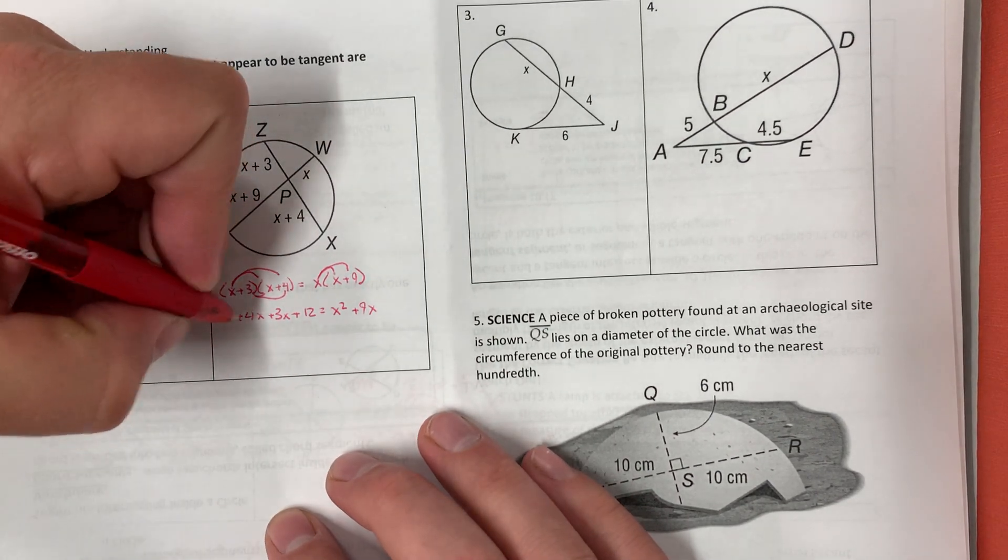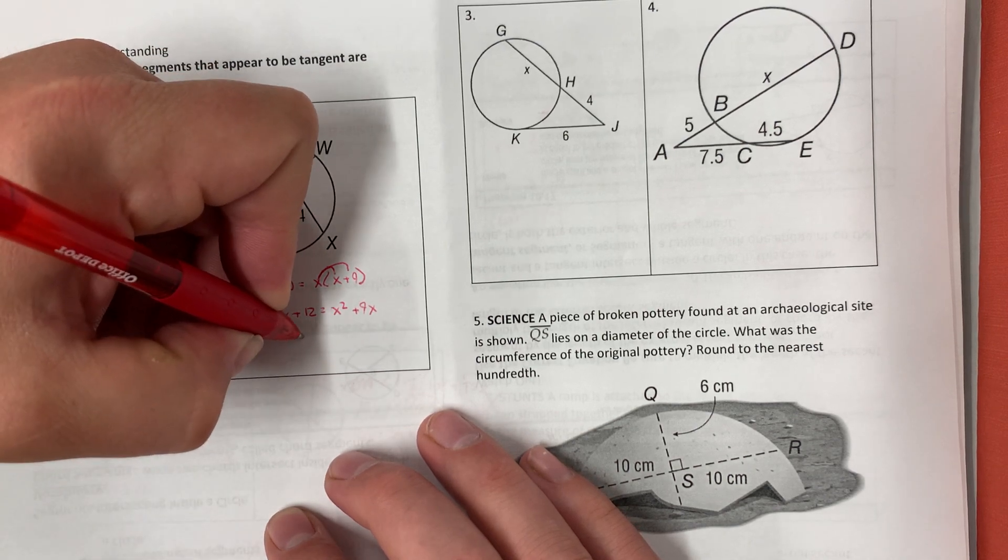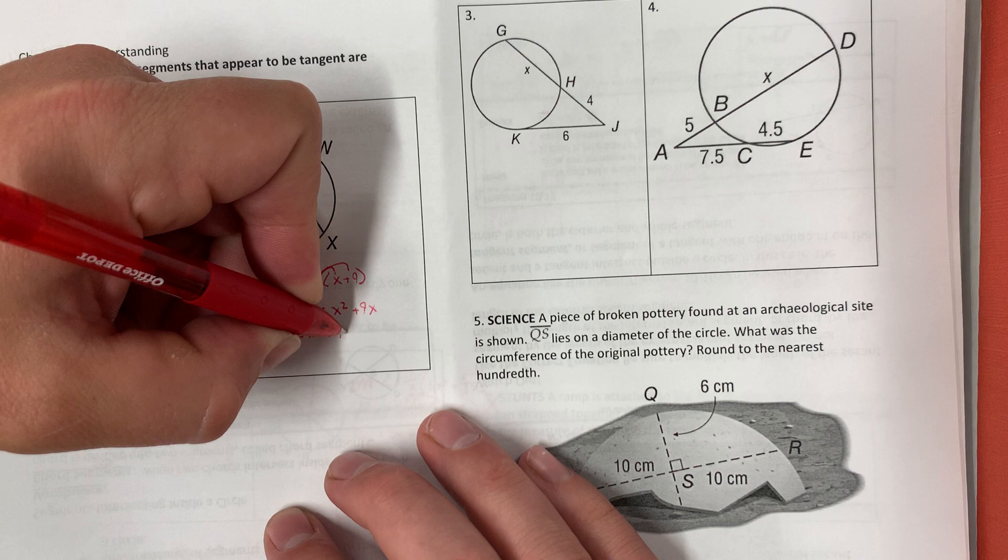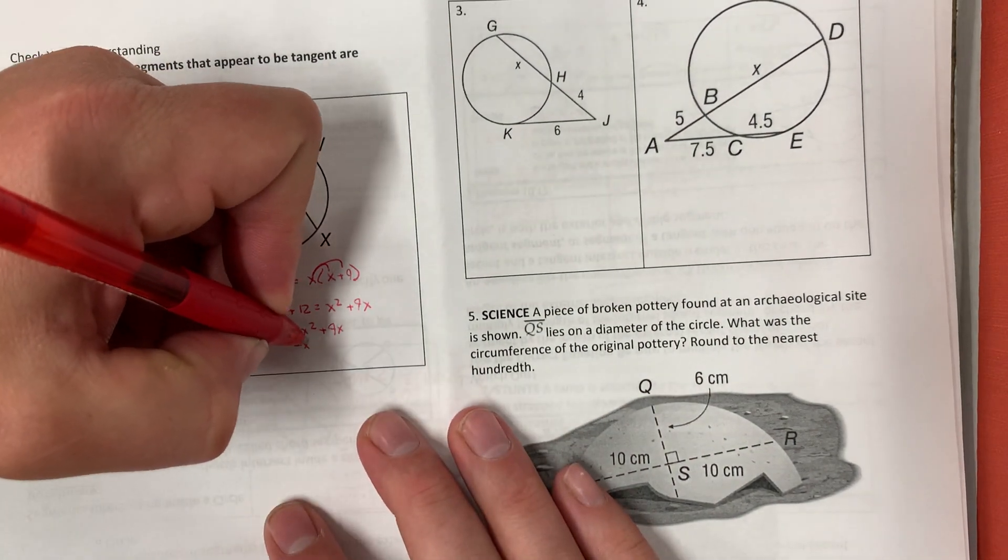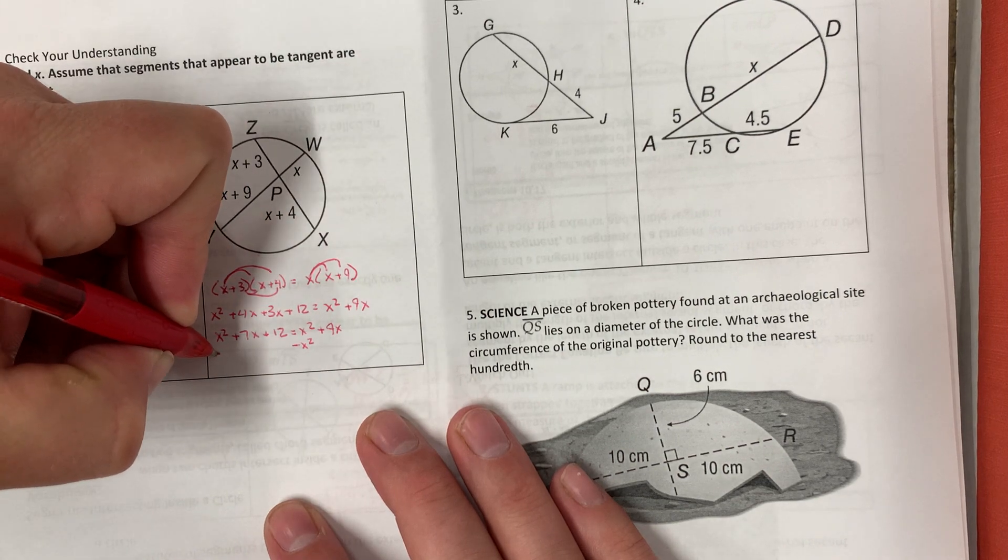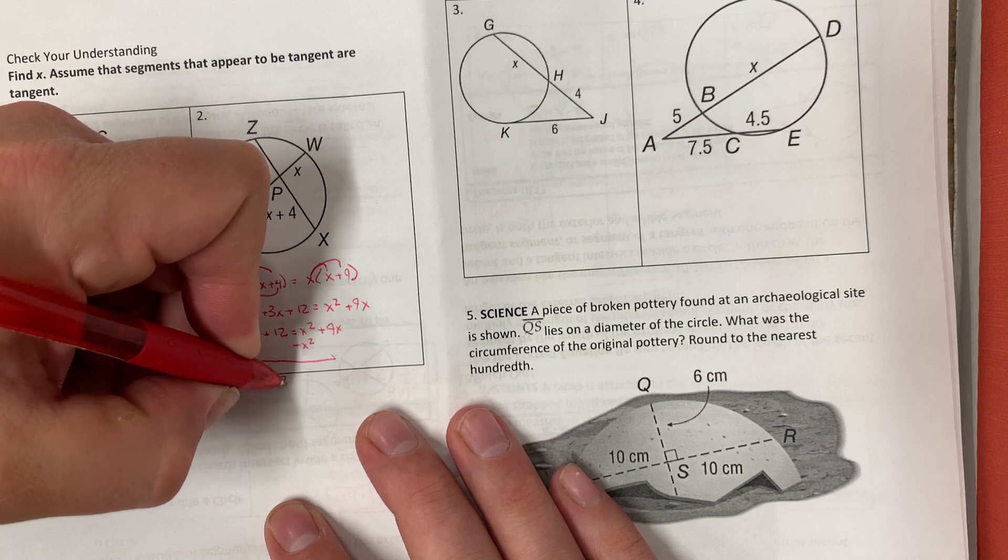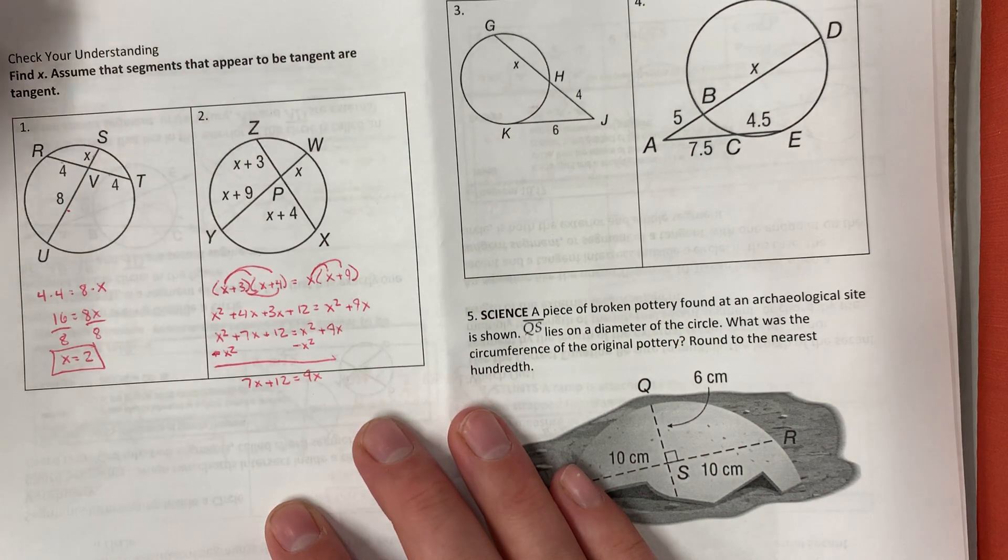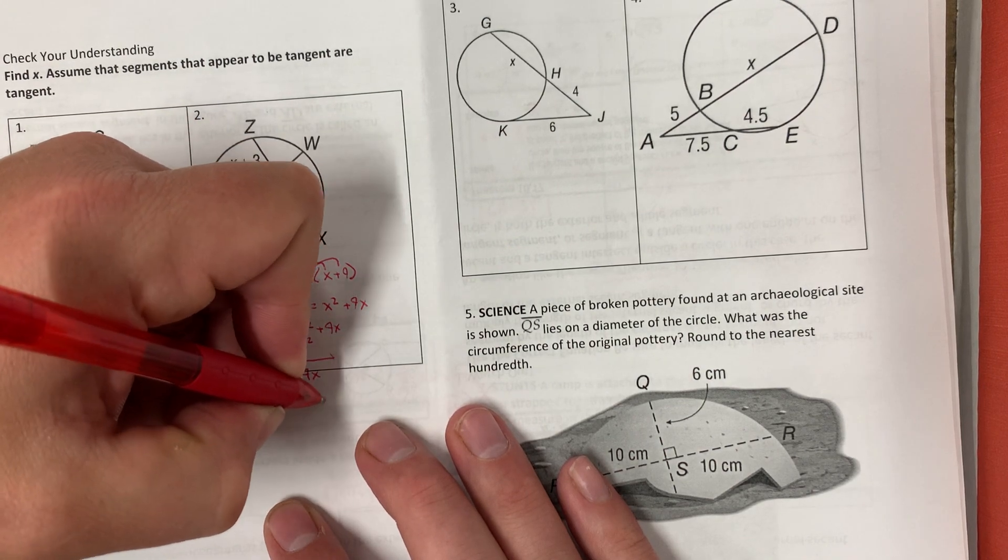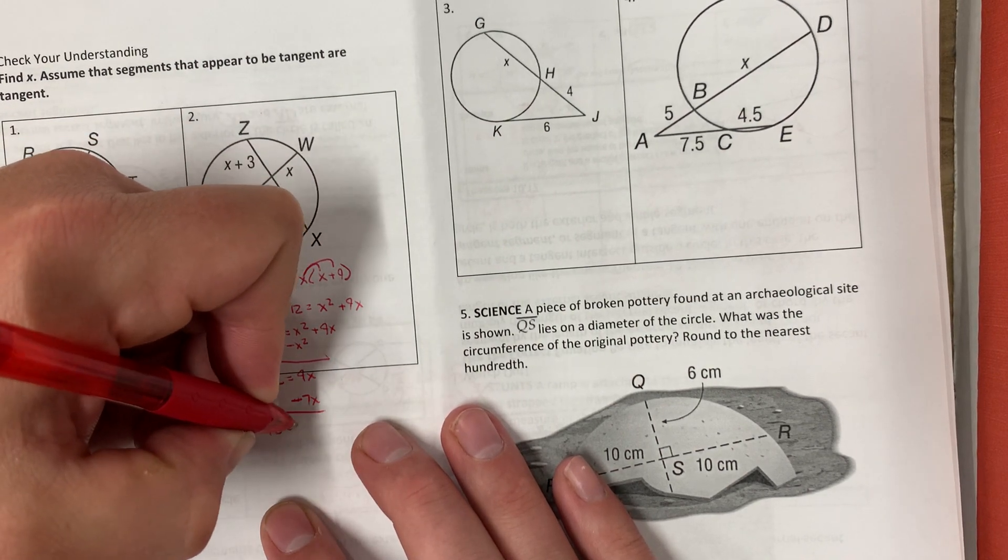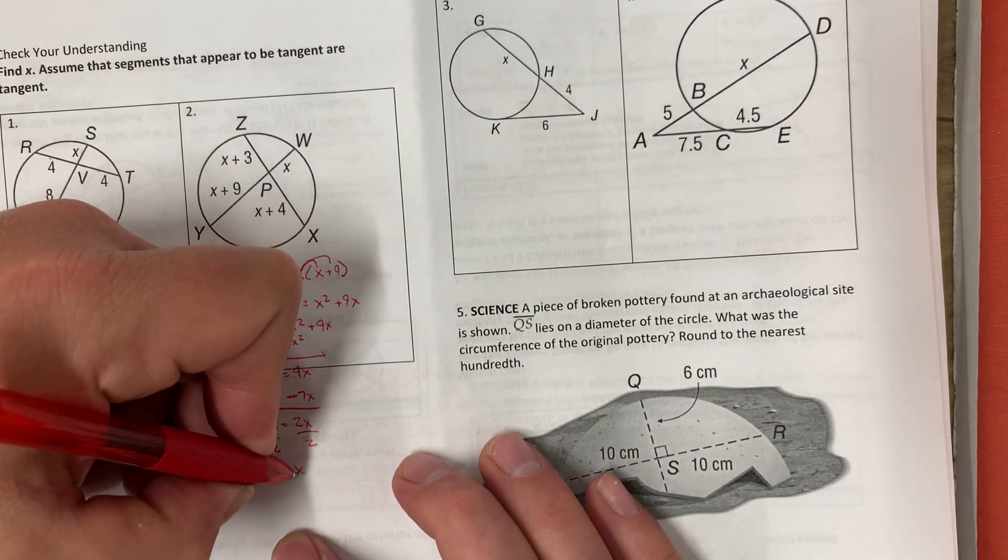We can go ahead and combine like terms over here. So we'll have X squared plus 7X plus 12 equals X squared plus 9X. And now we can start solving for X. I'm going to subtract X squared from both sides. So I get 7X plus 12 equals 9X. Subtract the 7X, so I get 12 equals 2X. Divide by 2, 6 equals X.